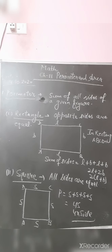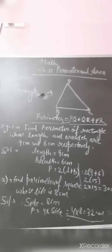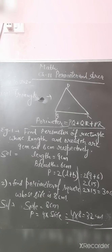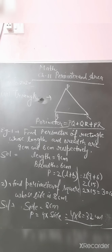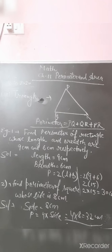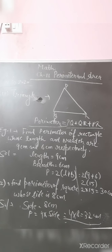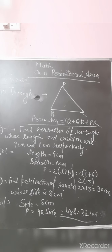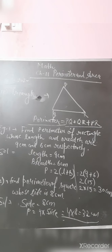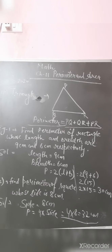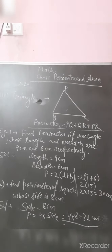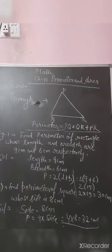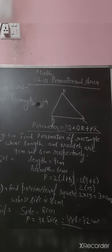Next is the triangle. A triangle PQR is given here. The perimeter of triangle PQR is equal to the sum of all sides: PQ + QR + PR. Because perimeter is the sum of all sides of any shape.